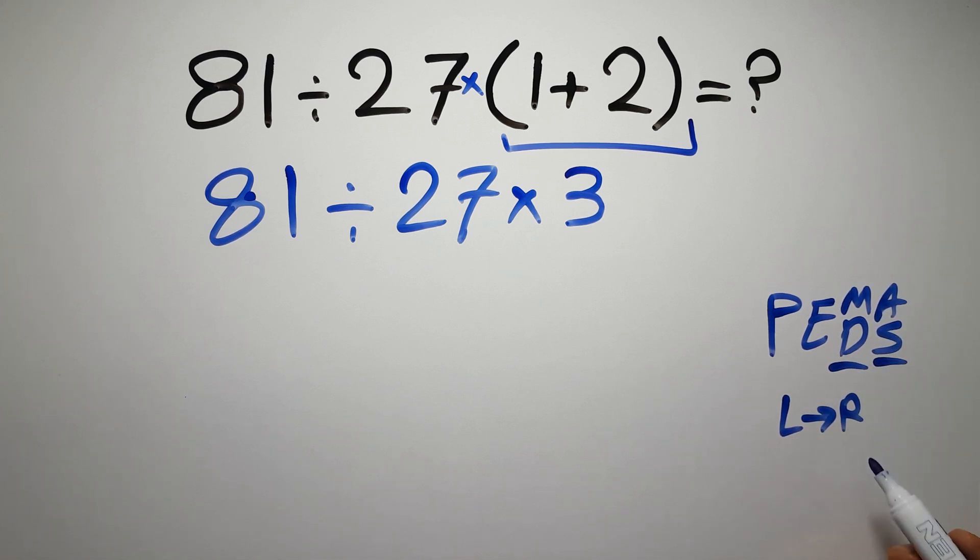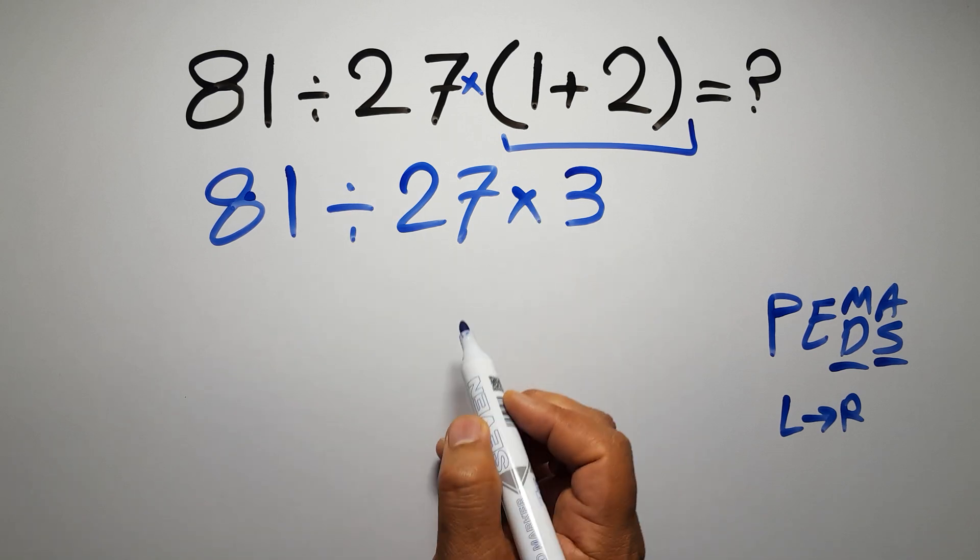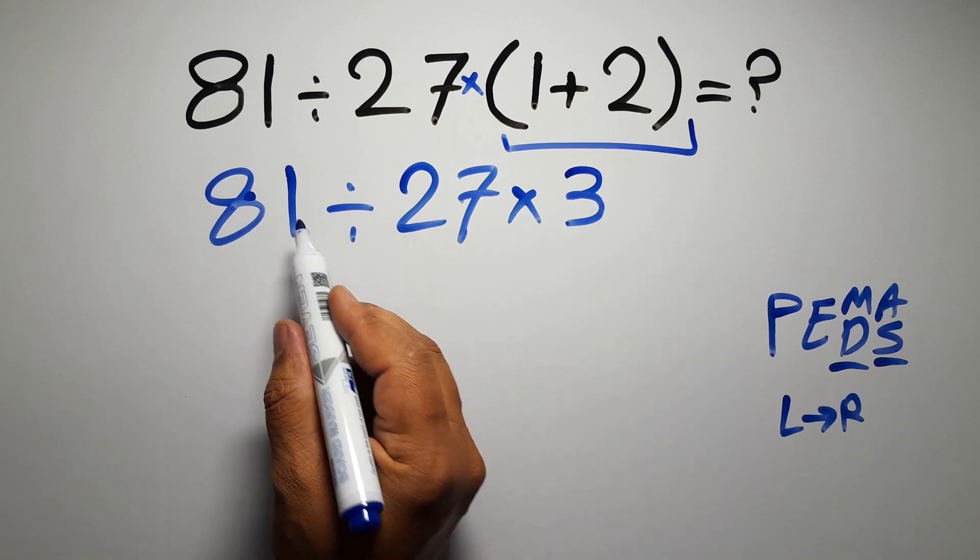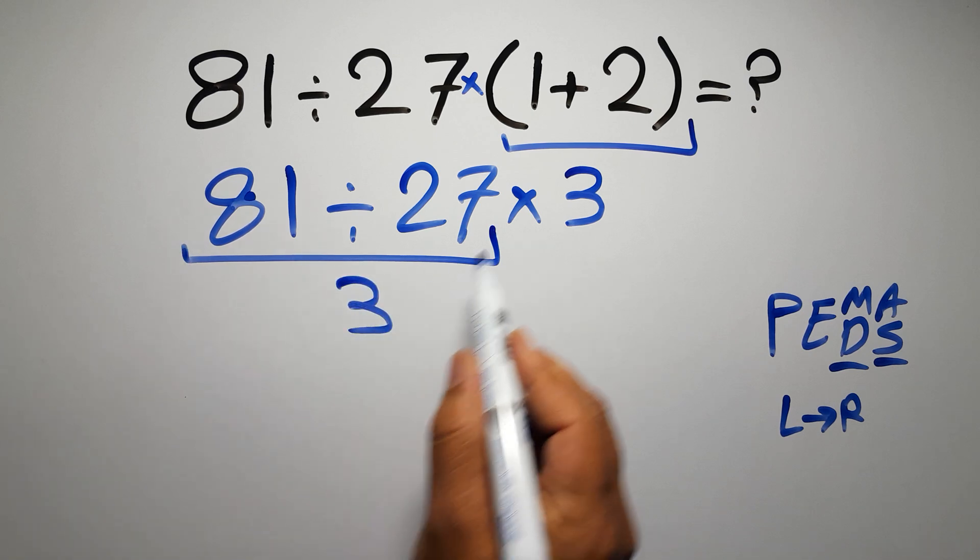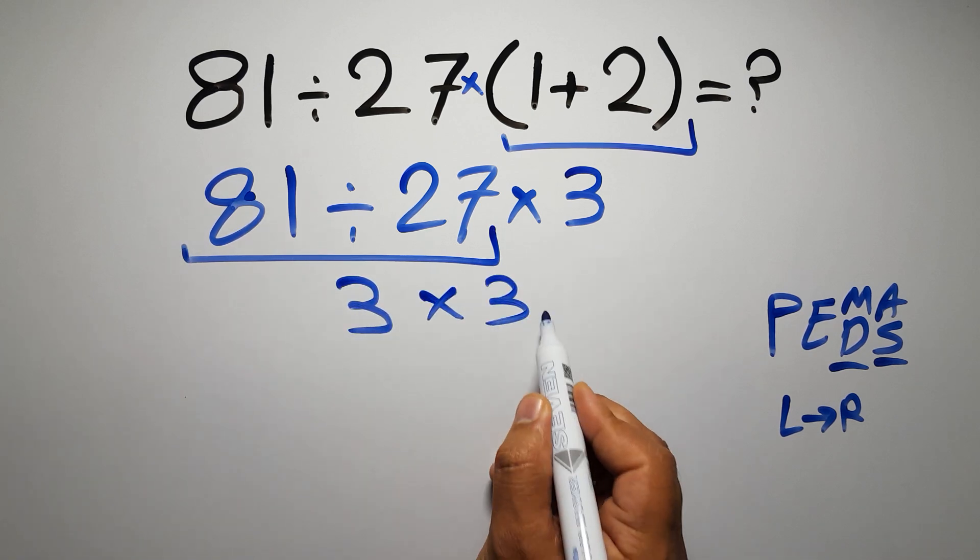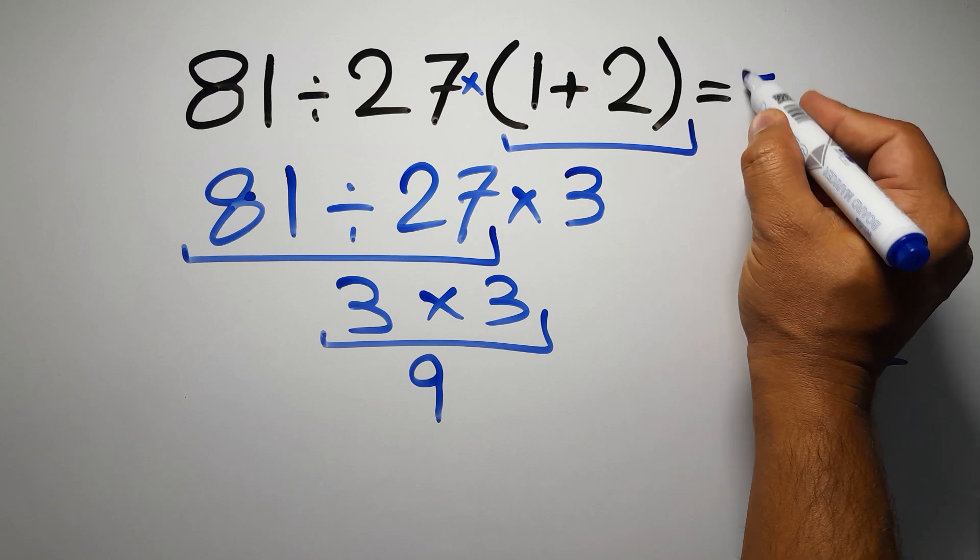So here first we have to do this division, then this multiplication. Okay, 81 divided by 27 gives us 3, and 3 times 3 is just 9, and this is our final answer to this problem. The correct answer is 9.